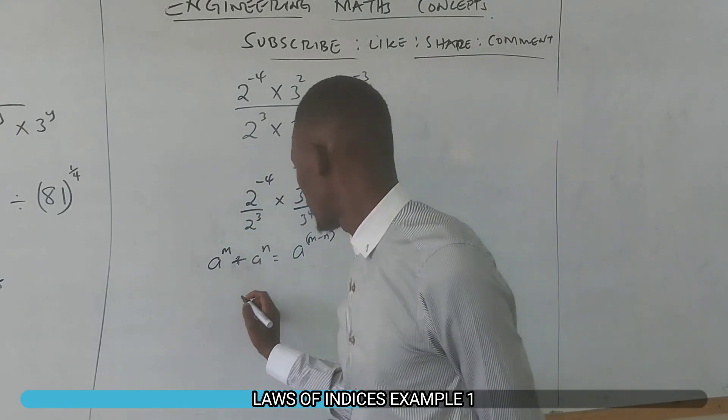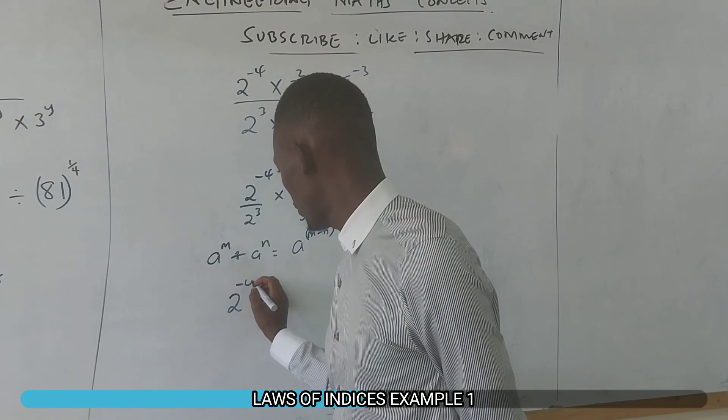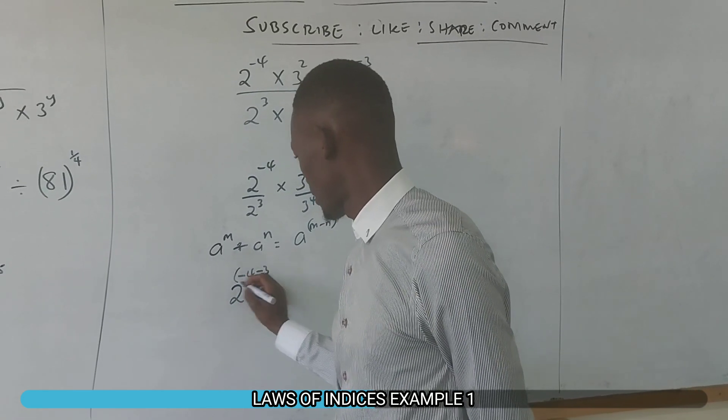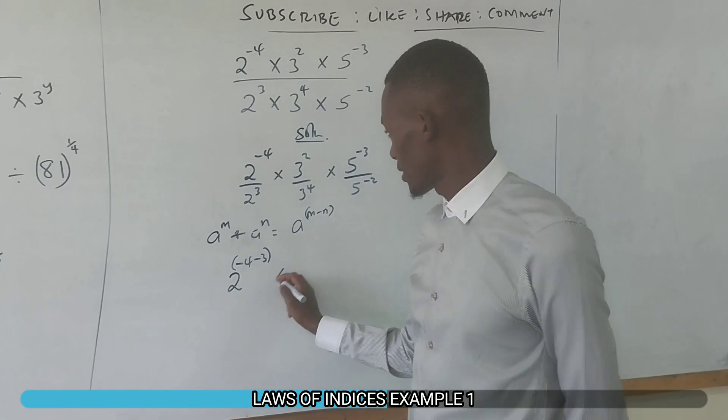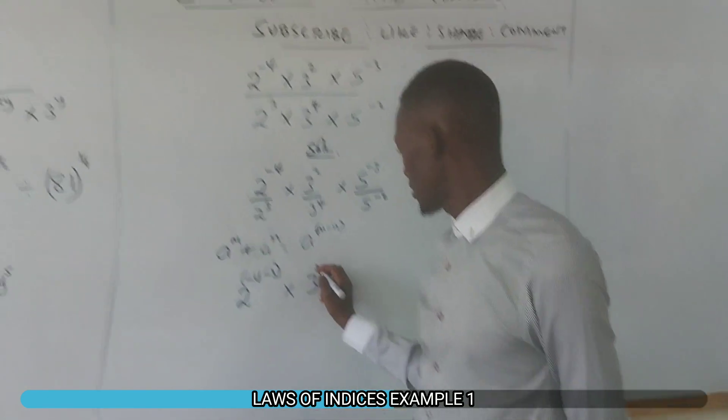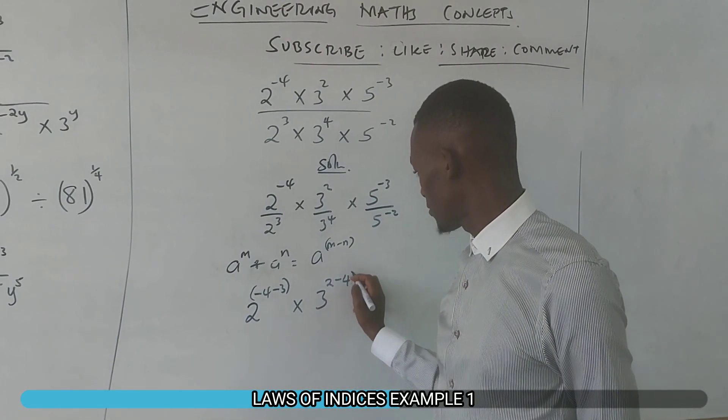In our first case, we have 2^-4 minus 3. This fraction simplifies to this. Then times 3^(2 minus 4).